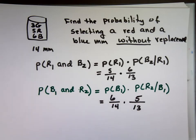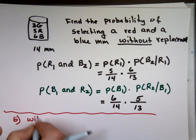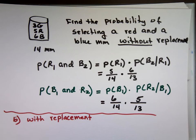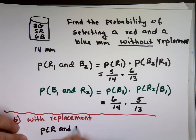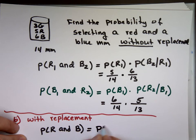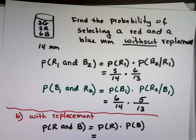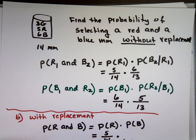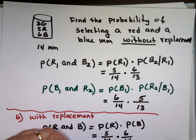Now for part B, instead of without replacement, let's call it with replacement. Same problem — what's the probability the first one is red and the second one is blue? Since with replacement means independent, the probability the first one is red times the probability the second one is blue equals 5 out of 14 times 6 out of 14. Notice 14 versus 13 — that's where the difference is. With replacement, these events are independent because you put the M&M back in.